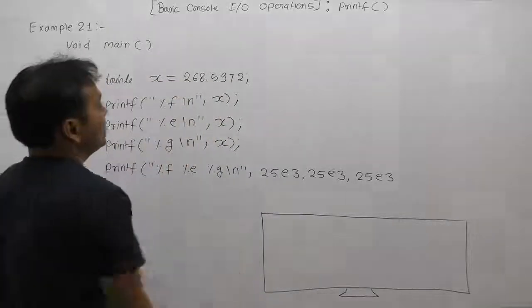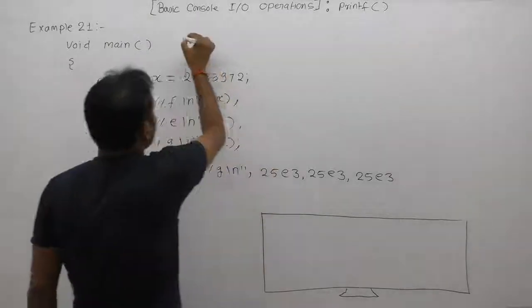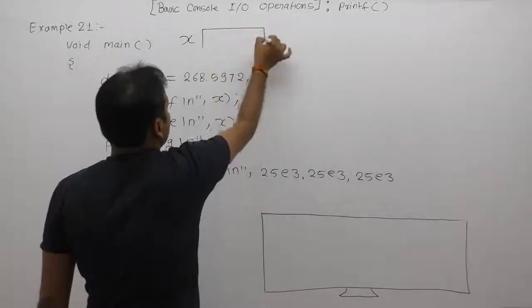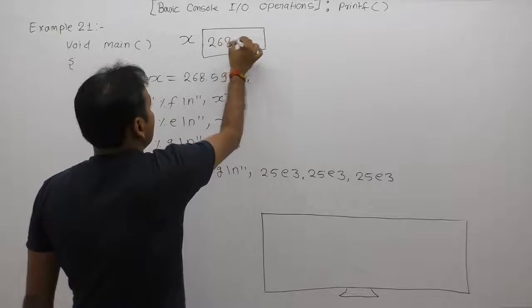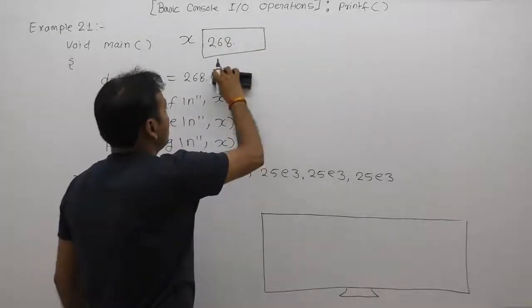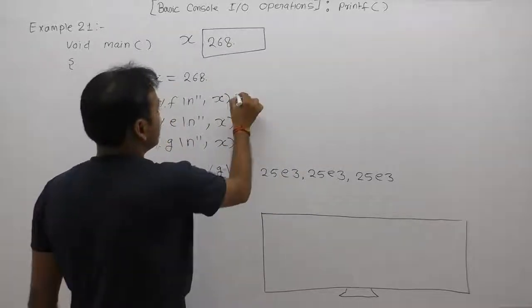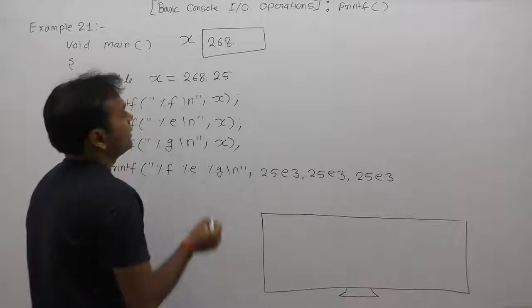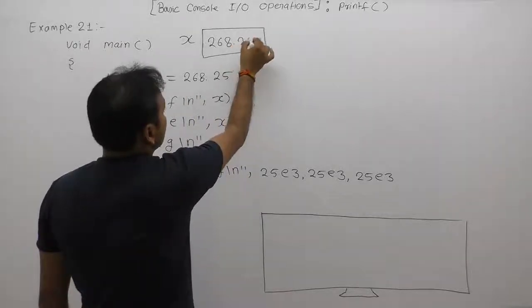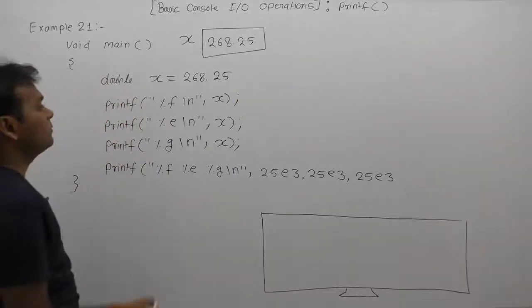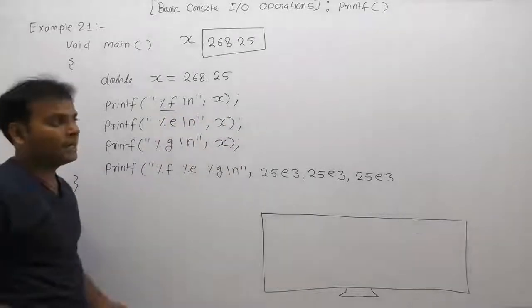First, we are declaring a variable x with an initial value of 268.25. Then we are displaying that value using the format specifier %f.